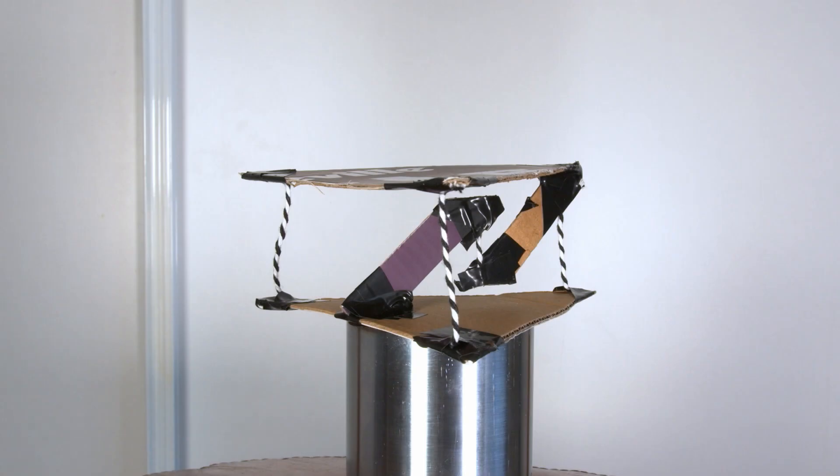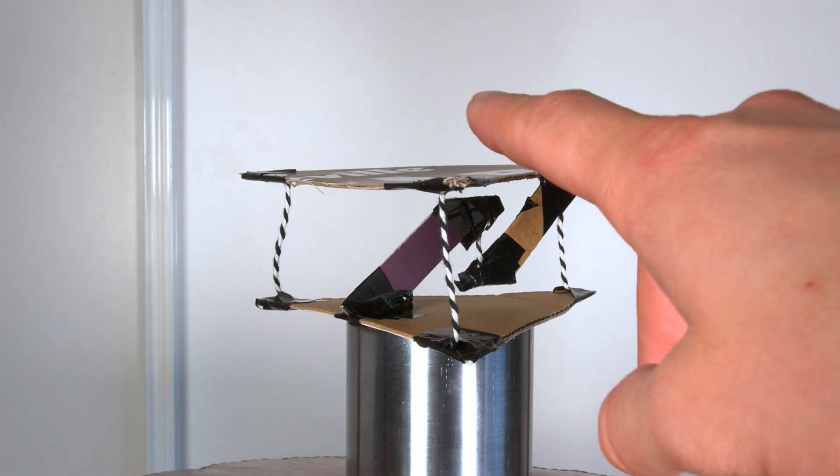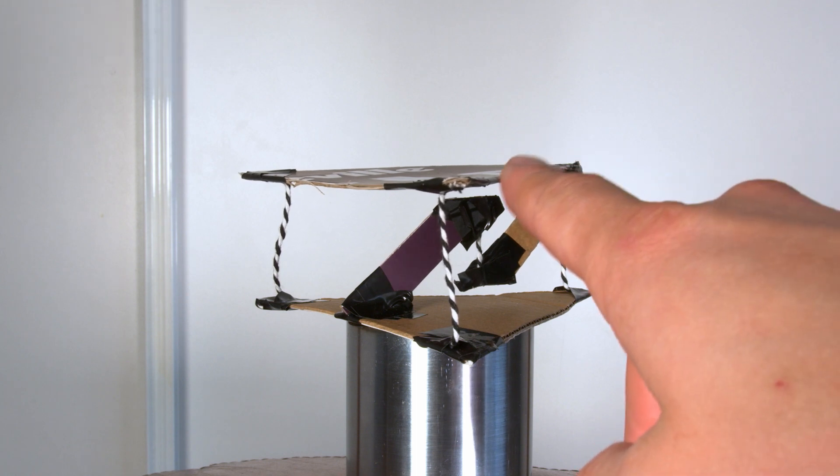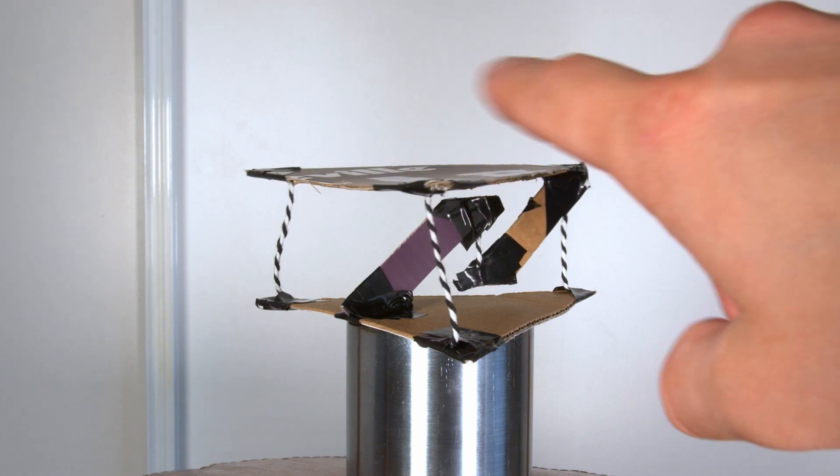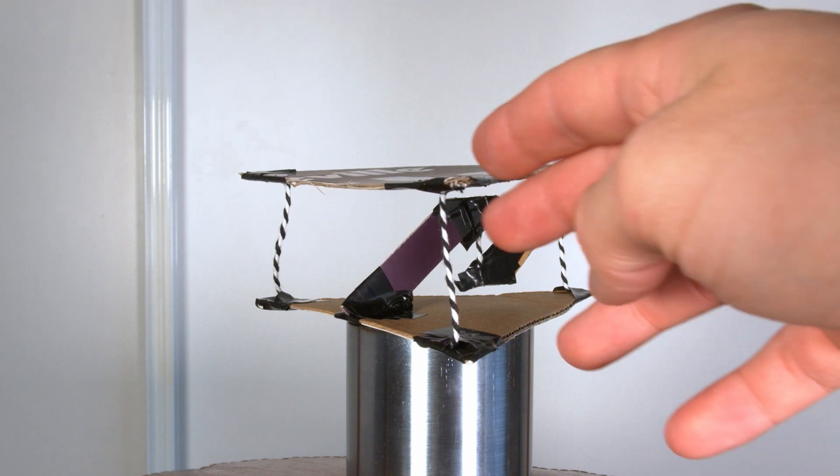Hey everyone, Scoop Scientist here. Today what I have here is what is known as a tensegrity structure. Now you may recognize this as the floating table, floating table with strings, or whatever you call it, but I'm here to show you first of all how cool this thing is,